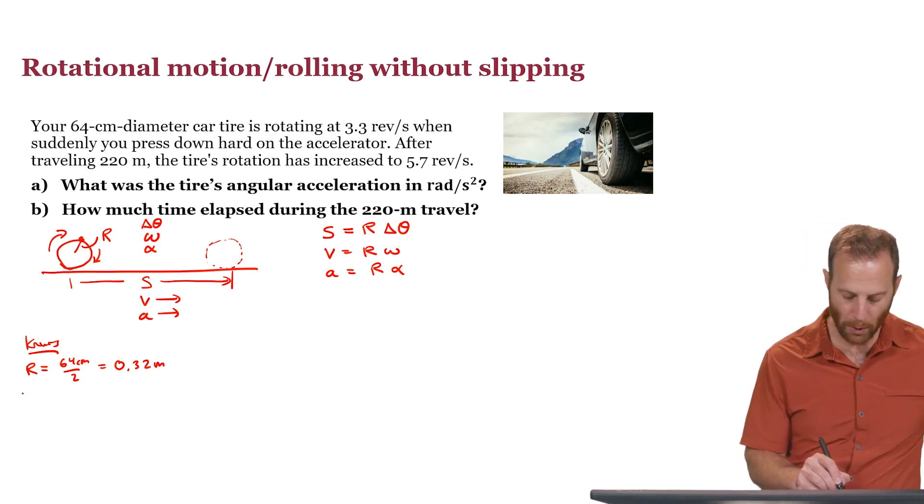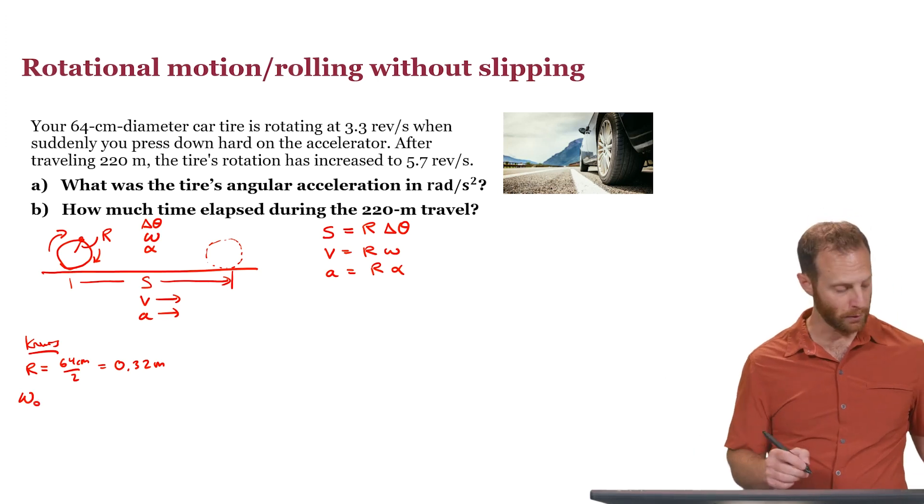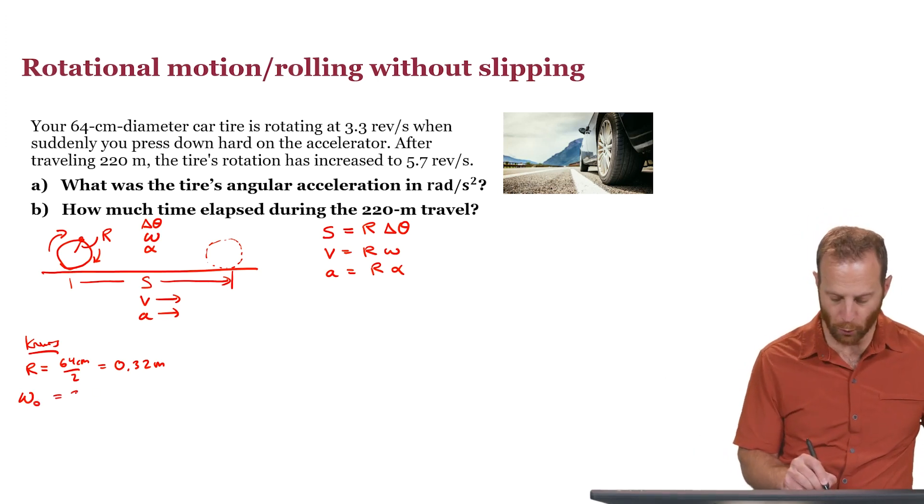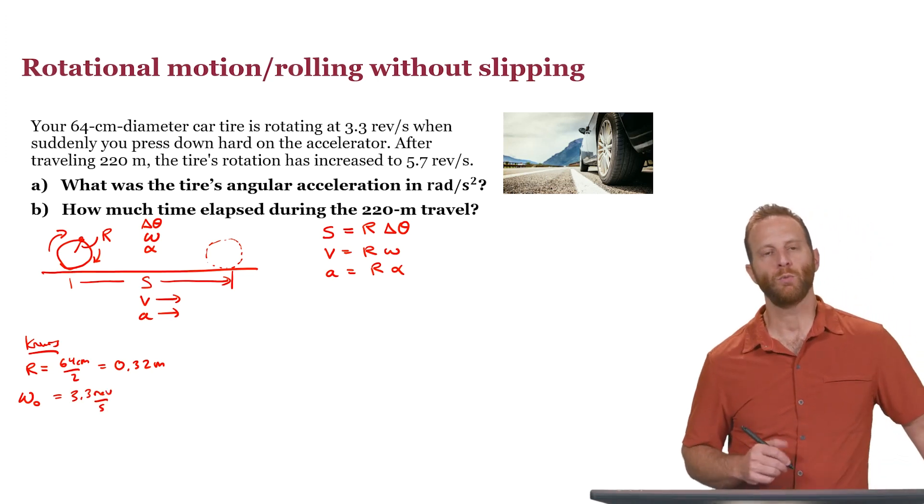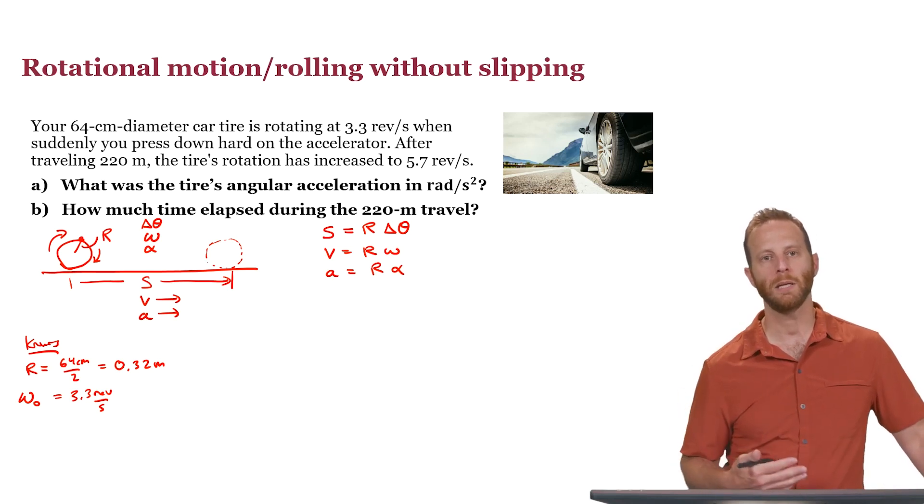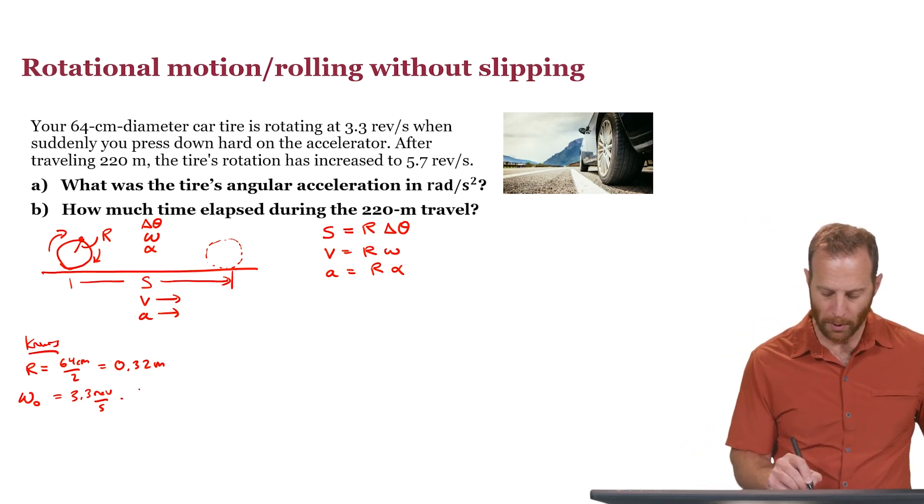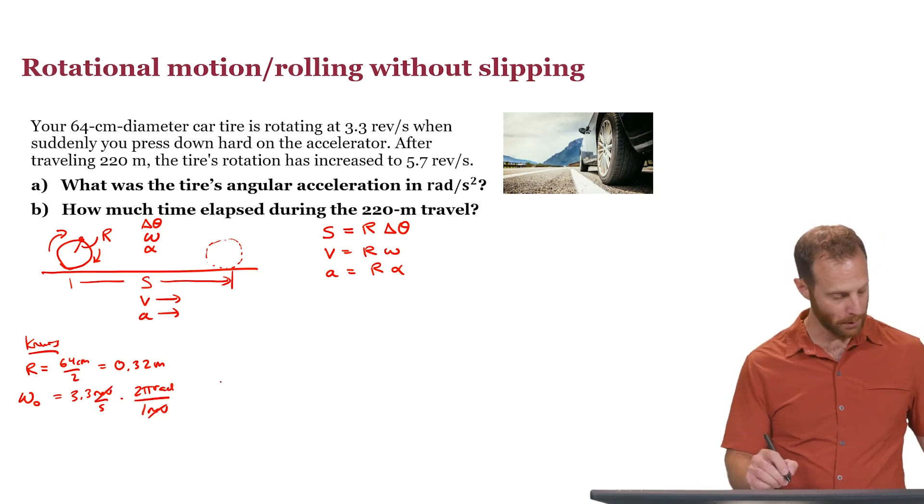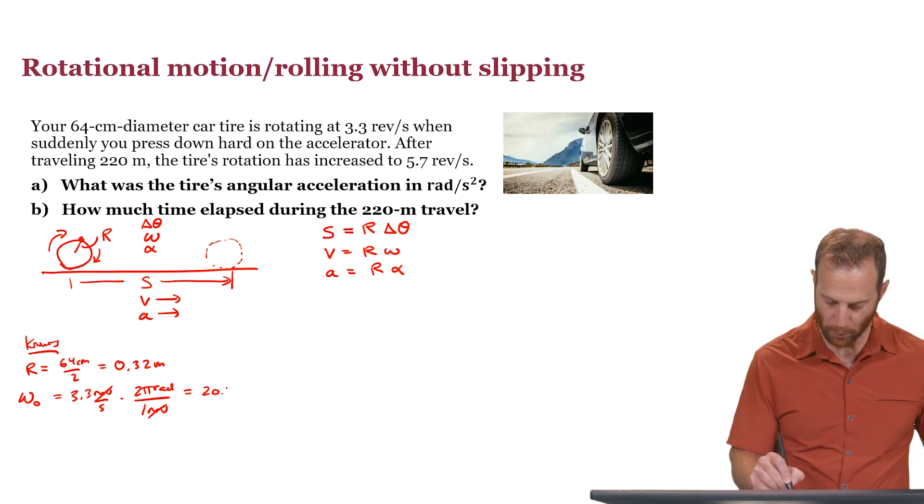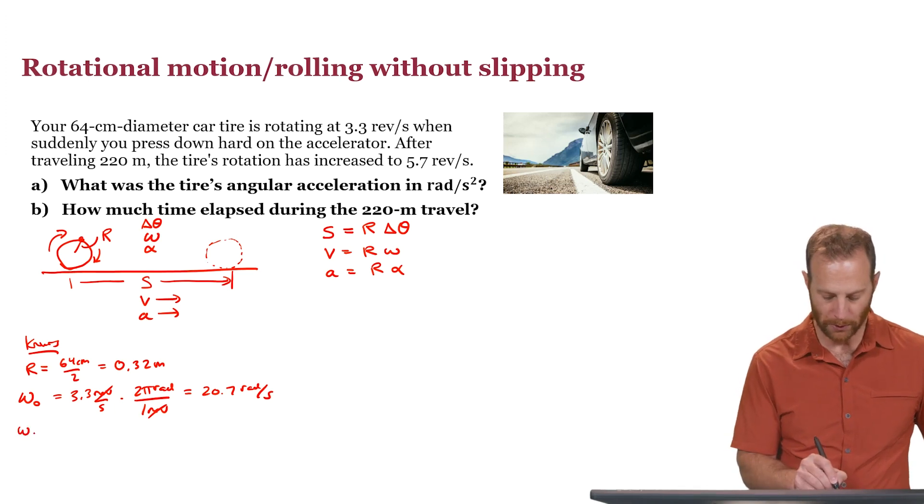What else do we know? We know the angular velocity at the beginning. You could write it as 3.3 revolutions per second, but that's not quite the right unit. We need to measure angular speed and angular displacement in terms of radians per second. Remember that there are 2 pi radians in every one revolution, and this conversion will give us an initial angular velocity of 20.7 radians per second.